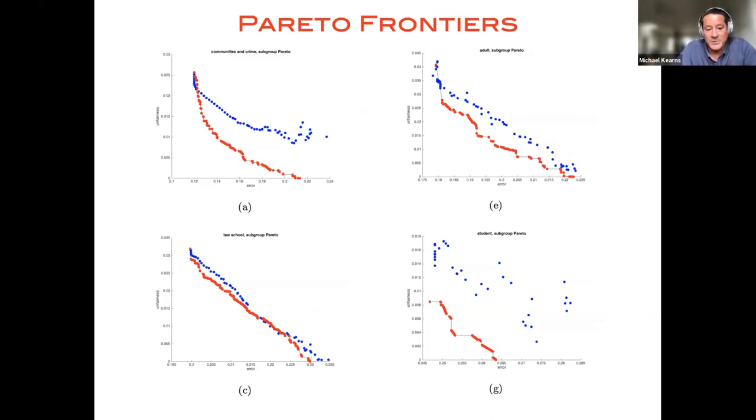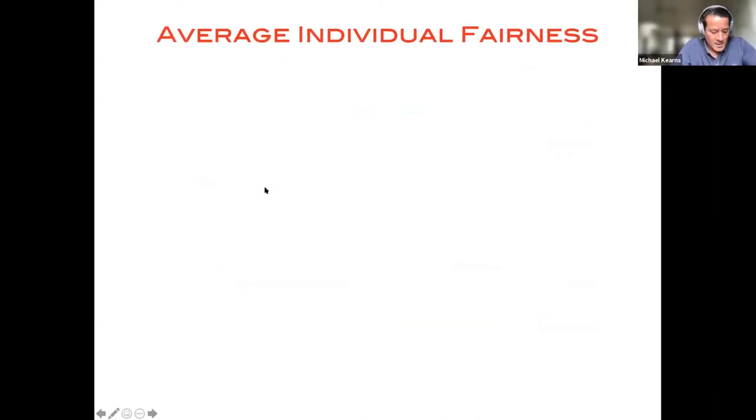And you'll see sometimes you get that, sometimes you don't. Here's a case where you face a pretty hard trade-off; per unit of unfairness that you squeeze out, you get a corresponding additional unit of error. Okay, I've only got a couple of minutes left.